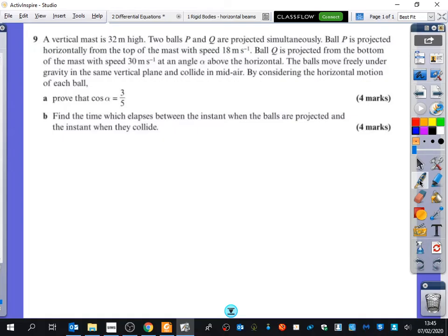It says there's a vertical mast which is 32 metres high. Two balls, P and Q, are projected simultaneously at the same time. Ball P is projected horizontally from the top of the mast with a speed of 18.